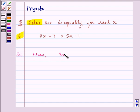Now, we are given 3x minus 7 is greater than 5x minus 1. Let us simplify by adding 7 to both sides. Minus 7 and plus 7 will get cancelled out. We are left with 3x is greater than 5x plus 6.